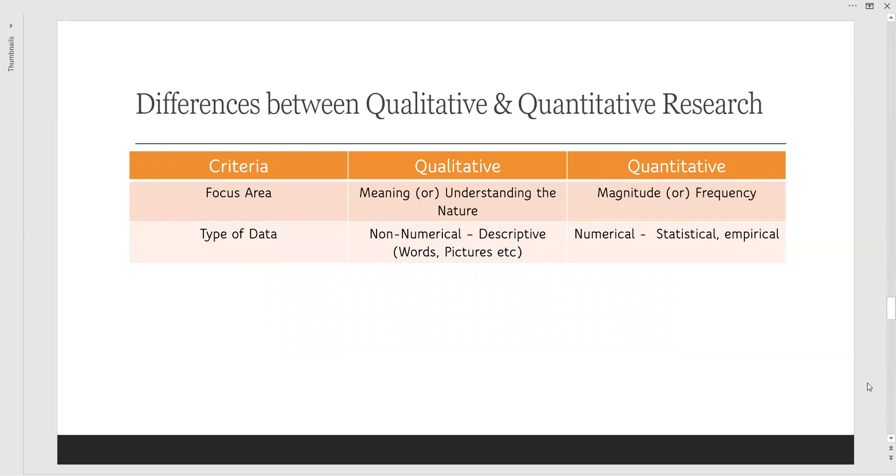Next one, type of data. In qualitative it is purely non-numerical, it is expressed in words and pictures - it is a descriptive one, narrative one. But when it comes to quantitative it is purely numerical - it may be statistical, parametric, empirical values. This means number, it is completely a number game we can say.